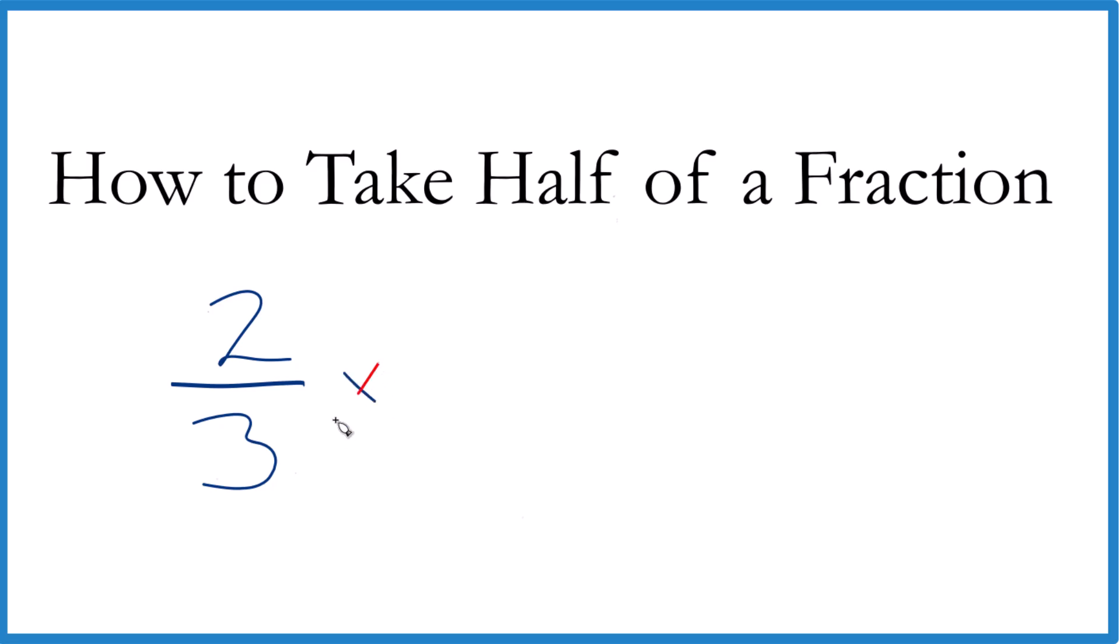So times one-half, and two times one is two. Three times two is six. So we get two-sixths. Half of two-thirds is two-sixths. But we can simplify this fraction. These are both even numbers. So two divided by two, that's one. Six divided by two, that's three. So half of two-thirds is one-third.